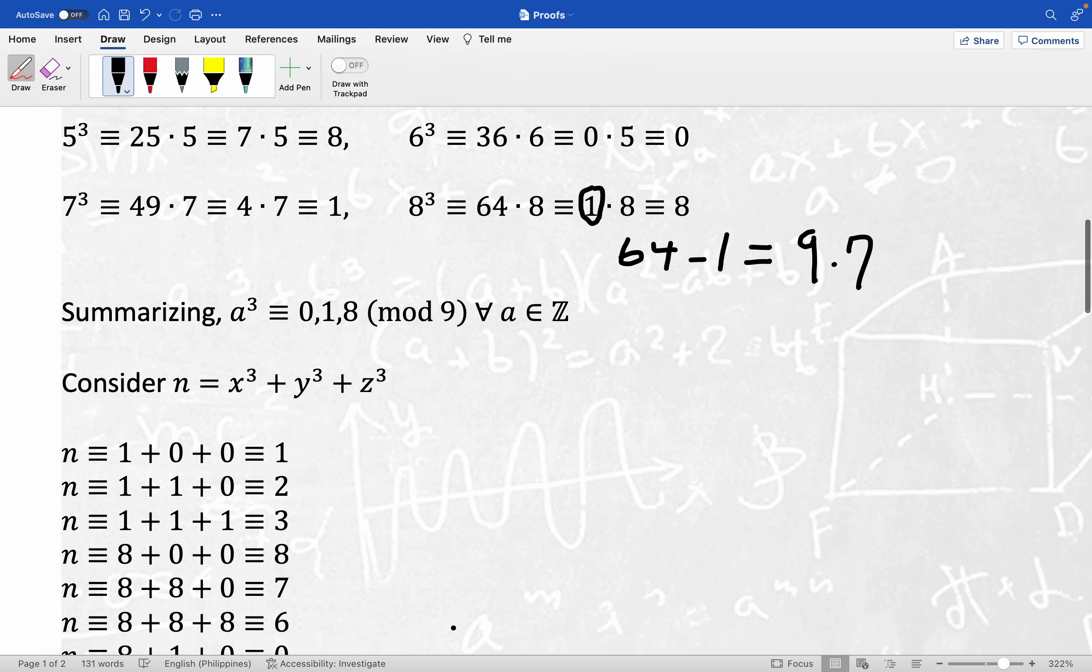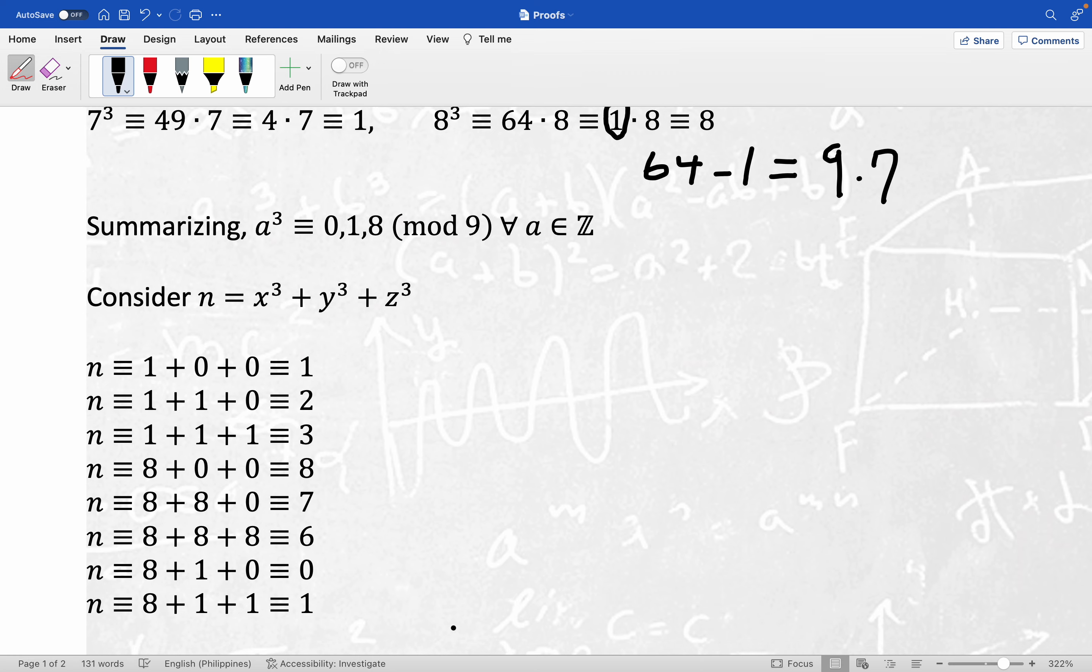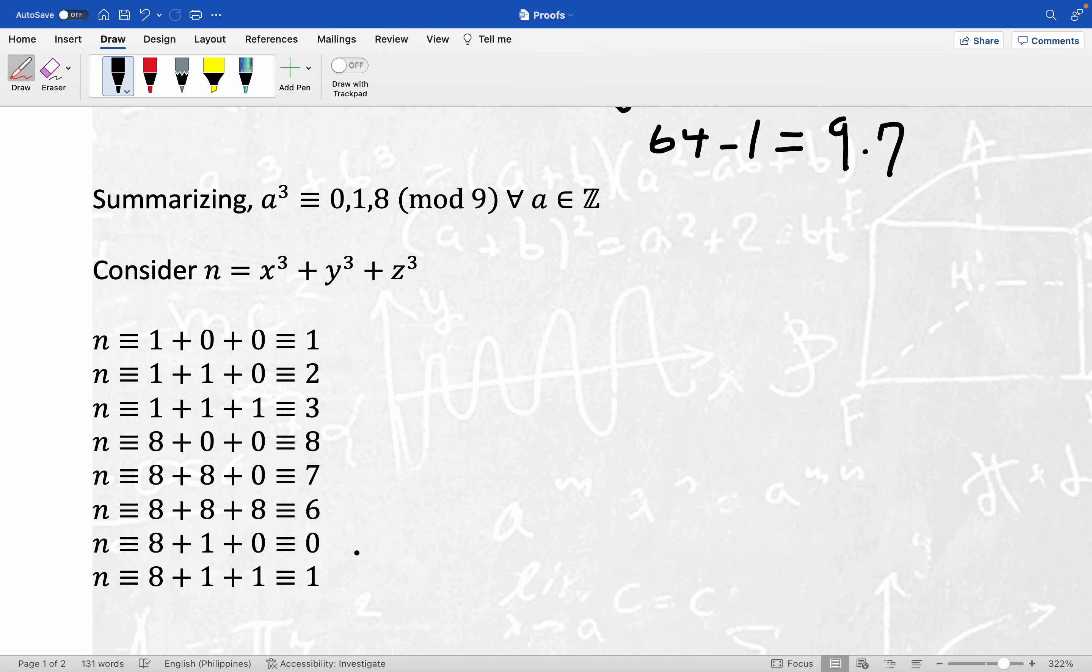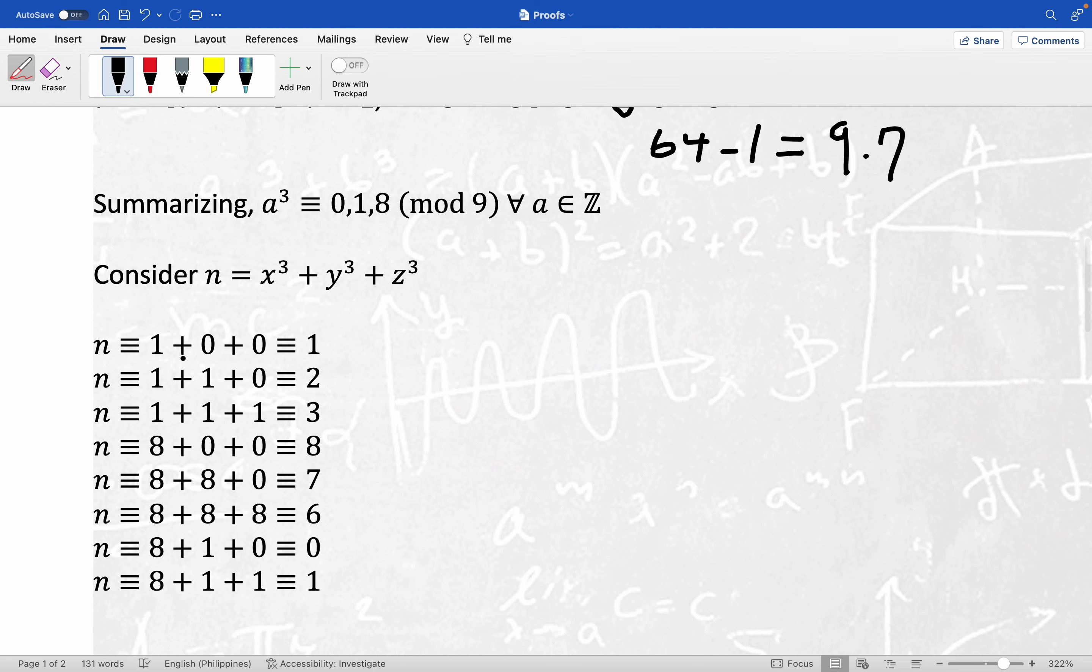Now, again, we're trying to look at the circumstances under which n can be written as the sum of three cubes. Okay, well, again, any cube has to be zero, one, or eight. We just demonstrated that on the previous line. And so these are just all possibilities right here. You see if x cubed were congruent to one and then y cubed were congruent to zero, z cubed congruent to zero, we get this statement right here where n is congruent to one.